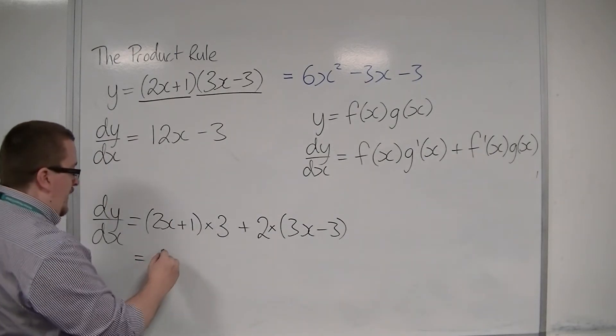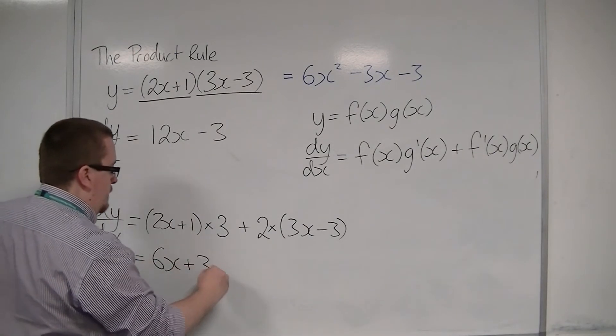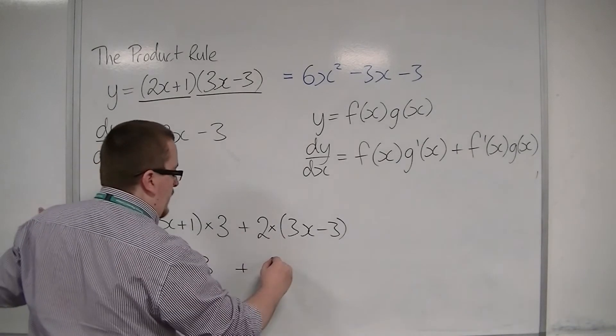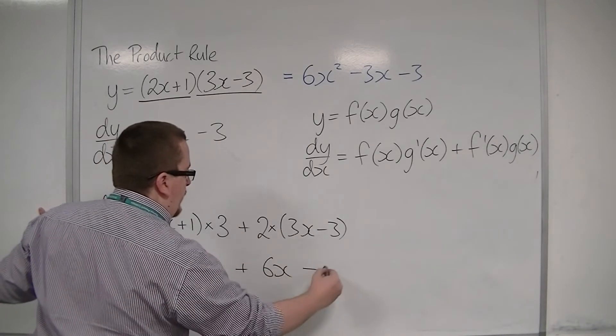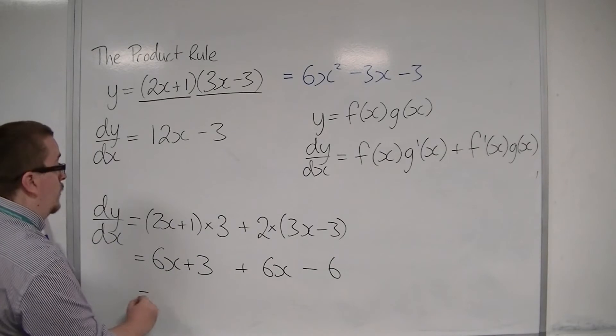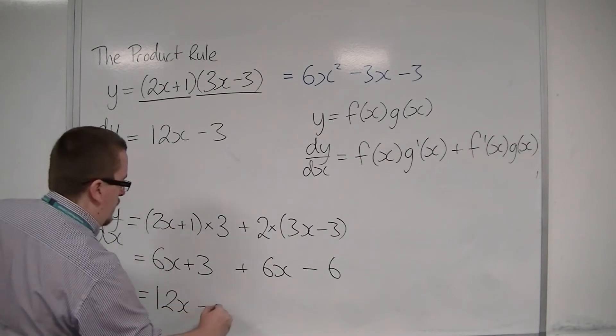So we're going to have 6x plus 3, plus 2 lots of 3s, so 6x minus 6, which is 12x minus 3.